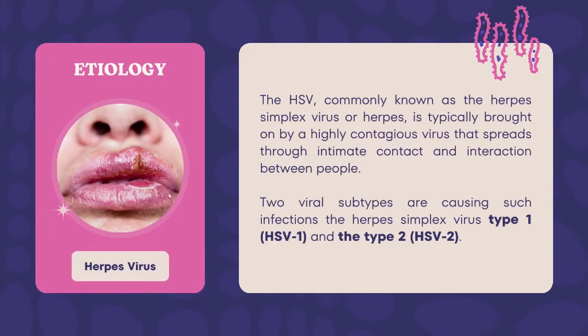The HSV, or herpes simplex virus, is typically brought on by a highly contagious virus that spreads through intimate contact between people. Two viral subtypes cause such infections: herpes simplex virus type 1, which is transmitted orally or through direct lesion contact, and type 2, which is transmitted through sexual intercourse. These viruses can cause genital and oral herpes and are the leading causes of these infections.